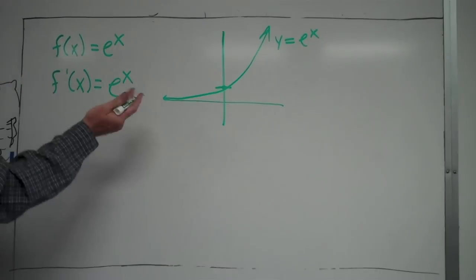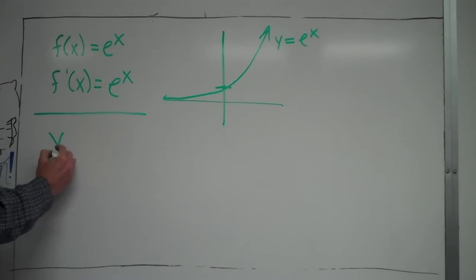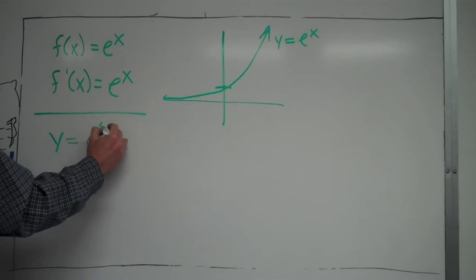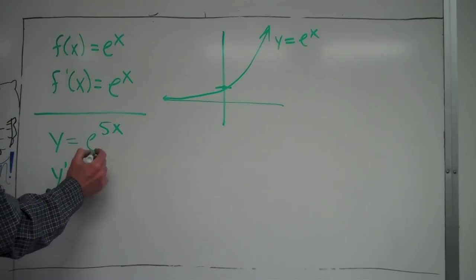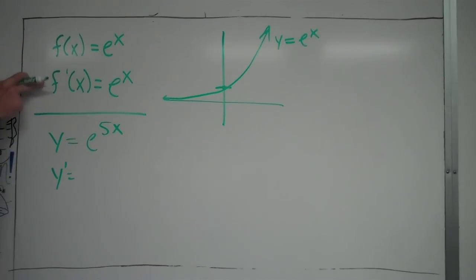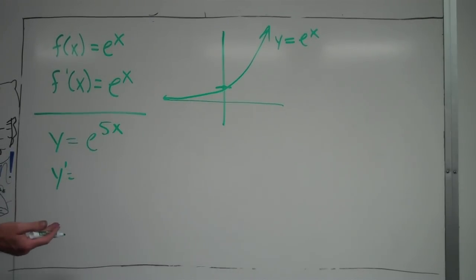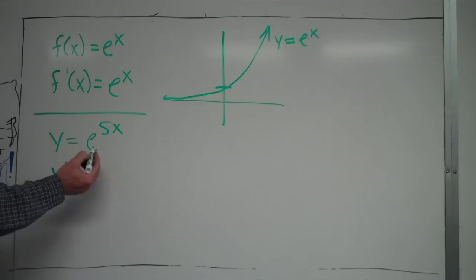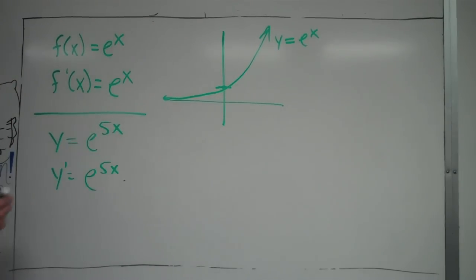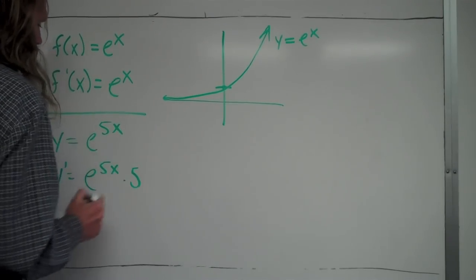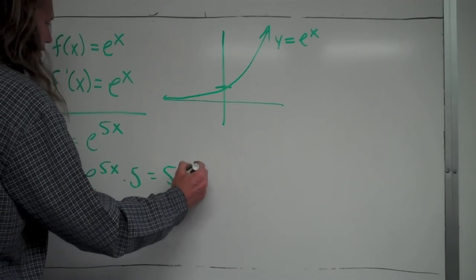You could get a function other than just e to the x. For instance, you could get something like y is equal to e to the 5x, and be asked to find the derivative of that. The derivative of e to the 5x — the only difference is the 5x inside, we have a different inner function, so it's going to be a chain rule problem. You work from the outside first, which is our e function, so the derivative of e to the 5x is just e to the 5x. Then you use the chain rule and multiply times the derivative of the inner function, which is 5.